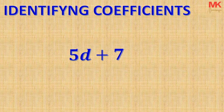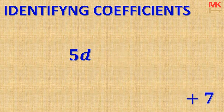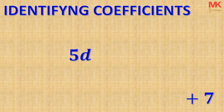If you want to know how to identify constant terms in expressions or equations, you can check up on our videos. We are going to set aside the positive 7 because it is not relevant here since we are looking for coefficients. The question is: what is the coefficient of the letter D? Apparently, the only number that is attached to the letter D is 5. So the coefficient of the letter D is 5.